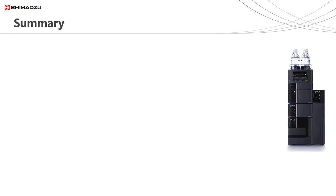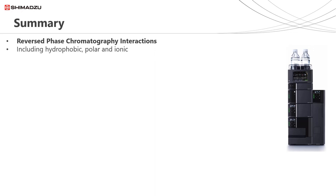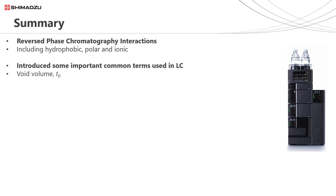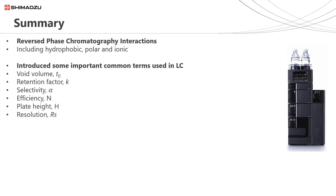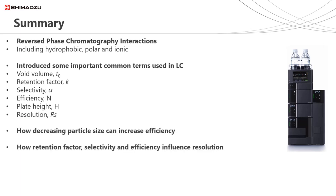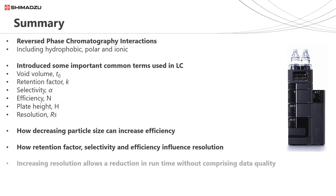So in summary of today's session, we have looked at reversed phase chromatography interactions including hydrophobic, polar and ionic. We introduced some important common terms used in LC: void volume T0, retention factor K, selectivity alpha, efficiency N, plate height H and resolution RS. We have shown how decrease in particle size can increase efficiency, how retention factor, selectivity and efficiency influence resolution, and lastly how increasing efficiency and therefore resolution allows a reduction in run time without compromising data quality.